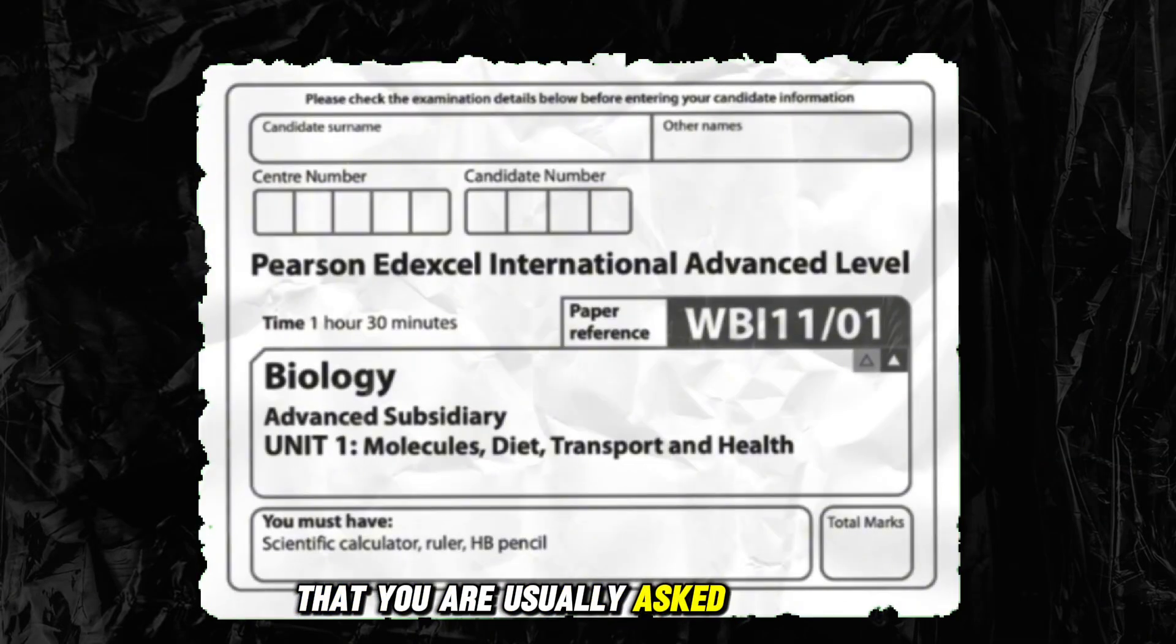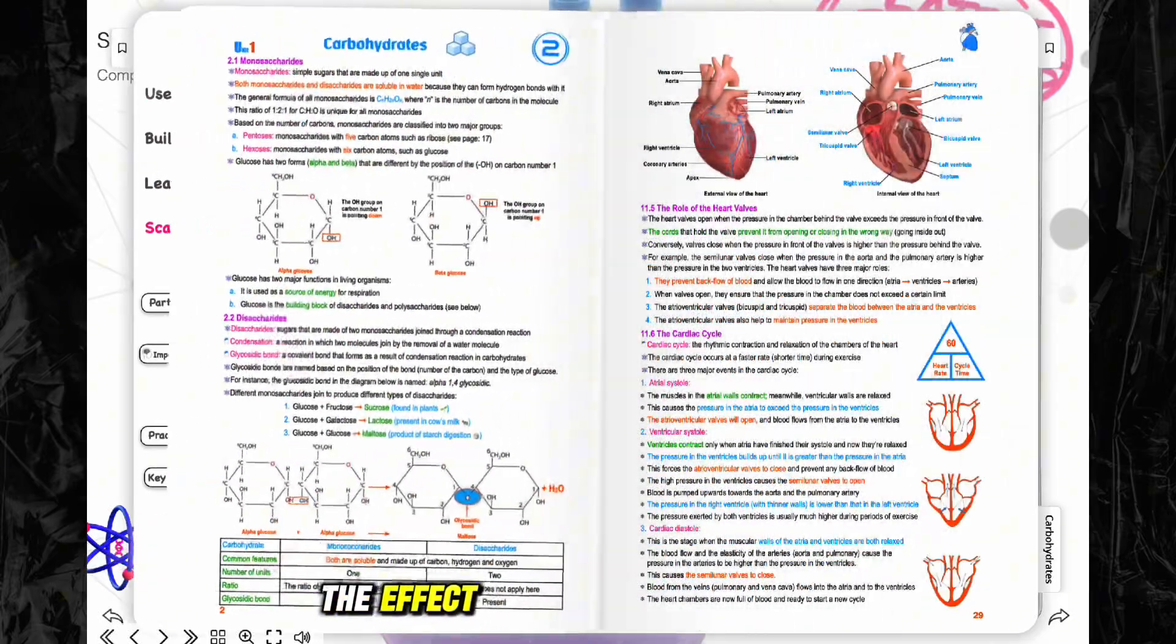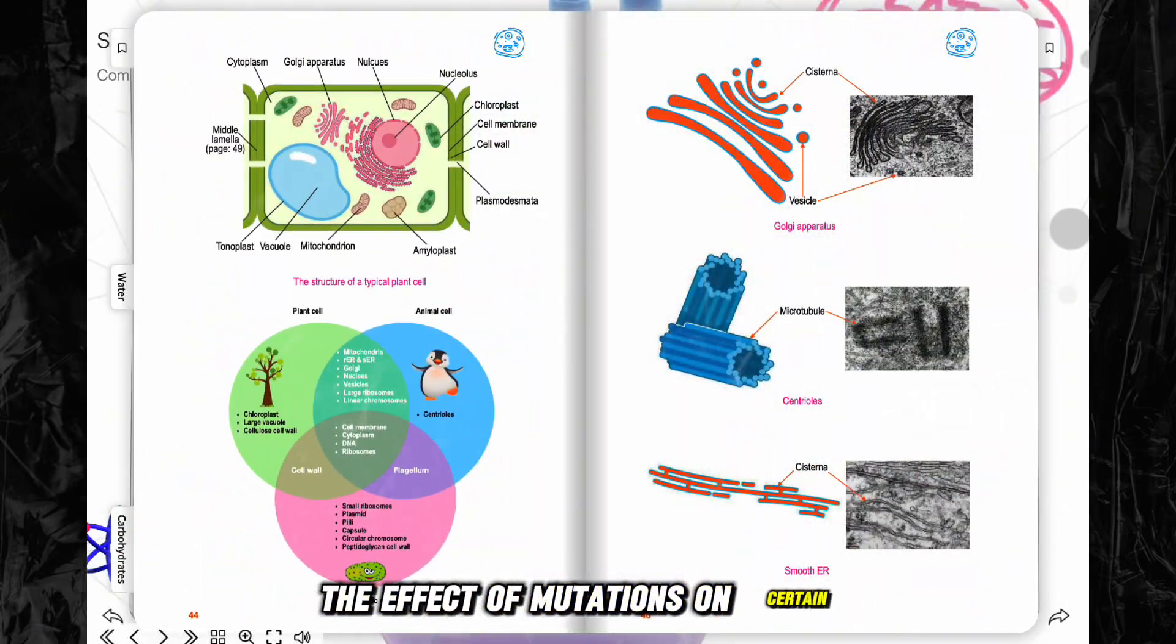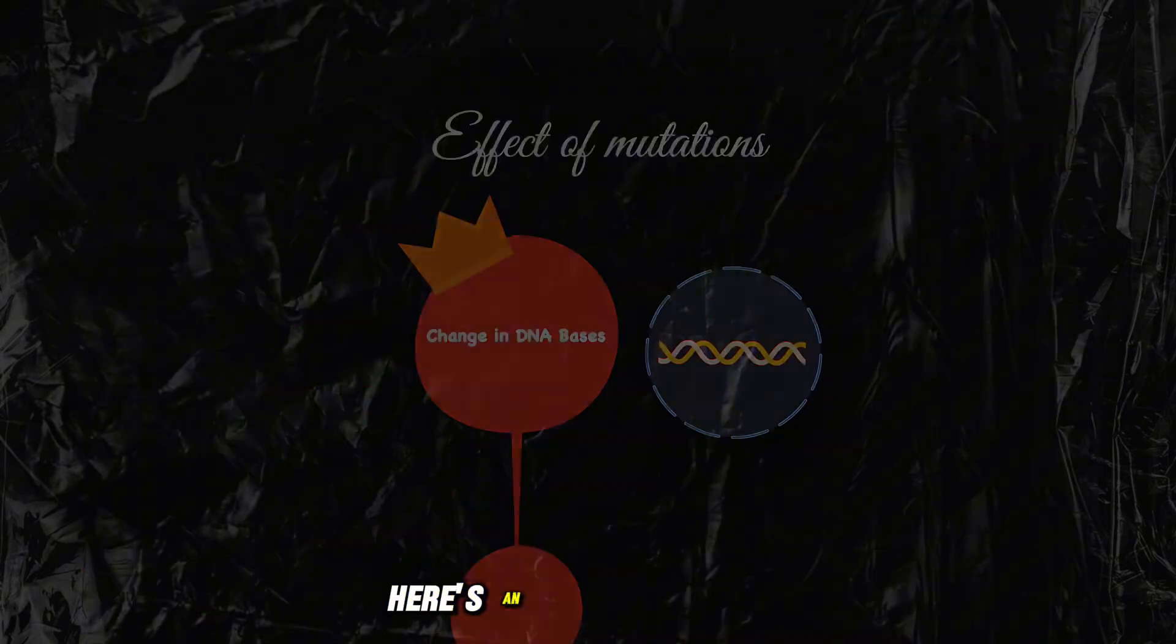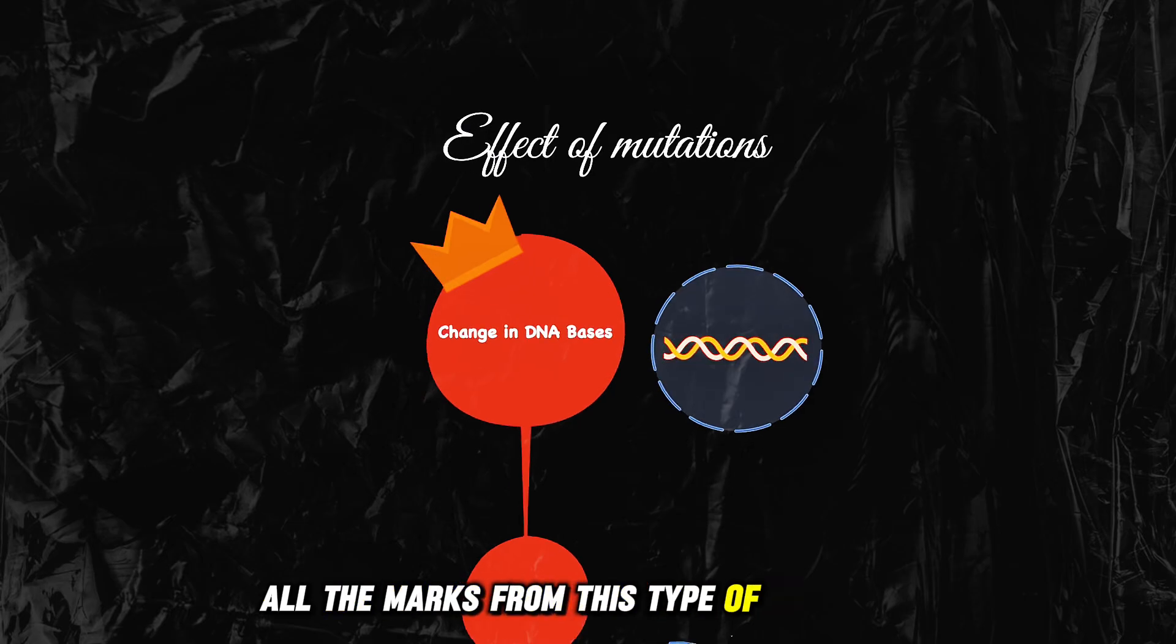One common question that you are usually asked in the biology exam is the effect of mutations on certain functions or structures. Here's an easy way to get all the marks from this type of question.